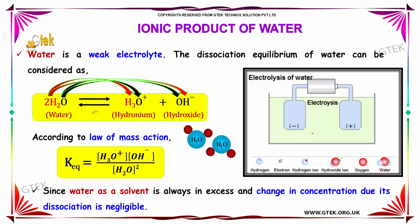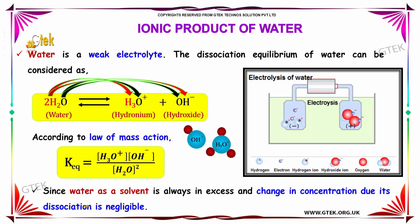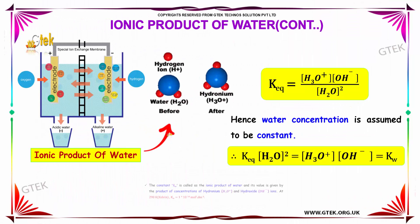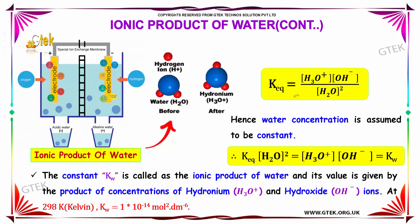According to the law of mass action, the equilibrium constant will be equal to the concentration of hydronium ion multiplied by the concentration of hydroxide ion, divided by the concentration of water squared, because there are 2 molecules of water present. Since water acts as a solvent, it is always in excess and the change in concentration due to dissociation is negligible. This is the equation for the equilibrium constant K.